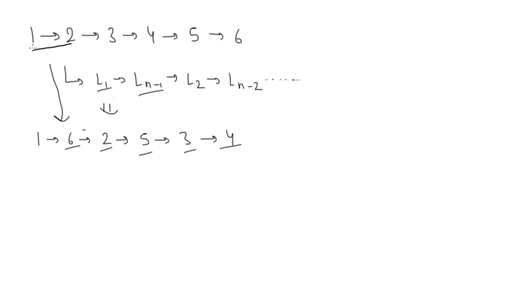For the logic, after the first element we need the last element, and after the second element we need the second last element. What I can do is first break the complete list into two lists — one list up to the middle element, and a second list after the middle element. Then I'll reverse the second list so I can access elements from the last.